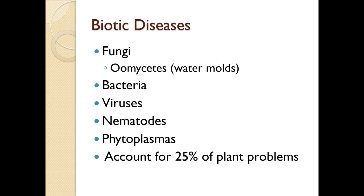Oomycetes, as we remember, is actually not a fungus - it is closely associated with fungal diseases. Other pathogens include bacteria, viruses, nematodes, and phytoplasma. This accounts for about 25 percent of plant problems, and about 85 percent of those are fungi. So when you're looking at biotic problems, chances are it may be a fungus.